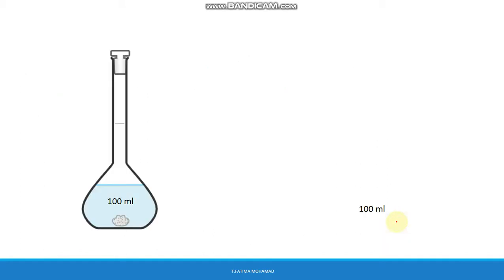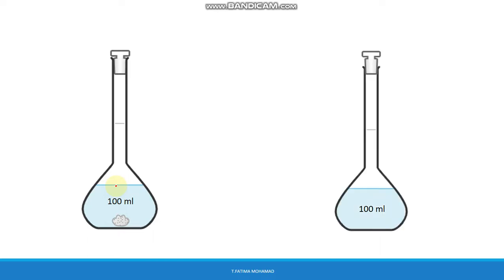We fill the volumetric flask to about half its volume and start shaking it to dissolve the solute completely. This means we shake until no visible solid remains — the solid will disappear after shaking and be completely dissolved.